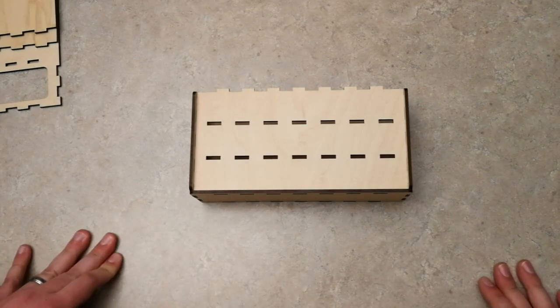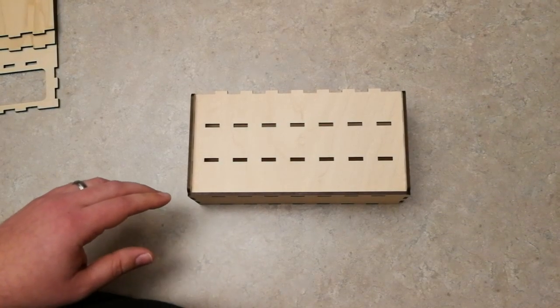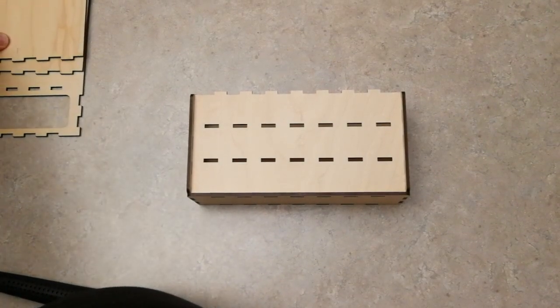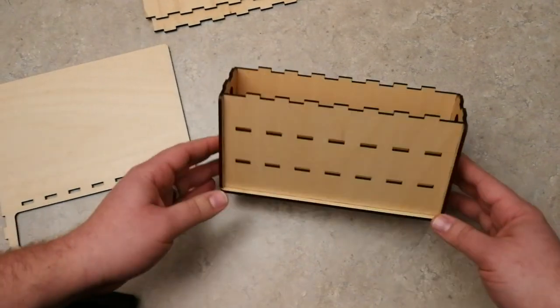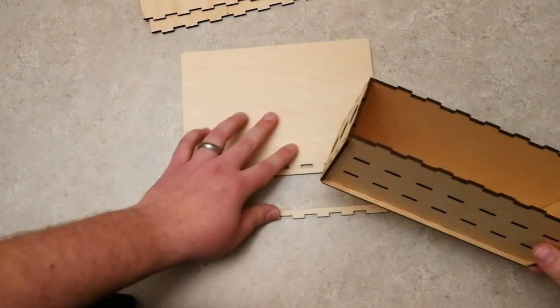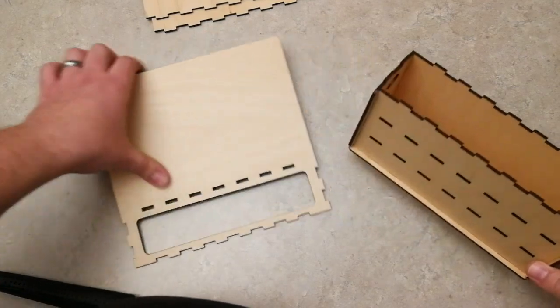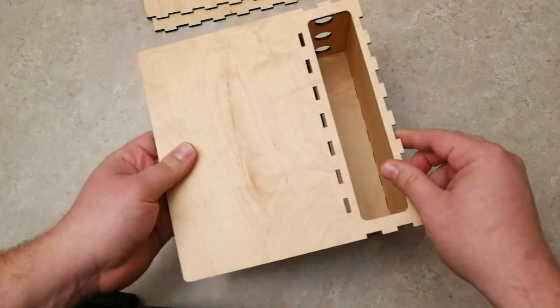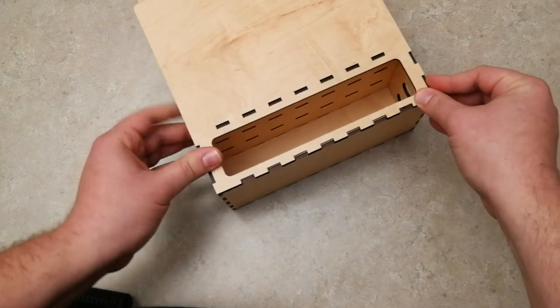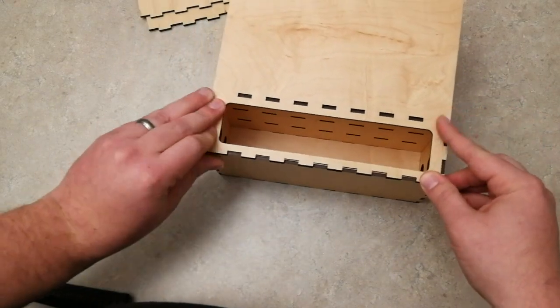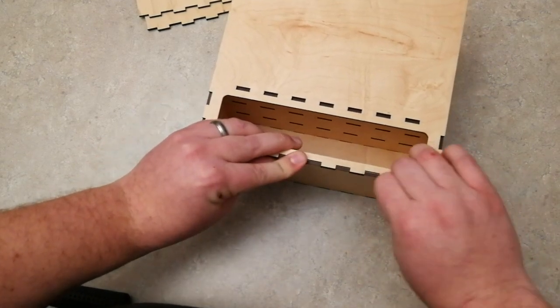So now what we're going to do is we're going to go ahead and put the back on here, and then we'll put the center slots in last here. So you can do this one of two ways. You can either put it like this and hammer it on or flip it over and do it backwards. I always like to do it backwards so I can see the joints as I'm doing it.